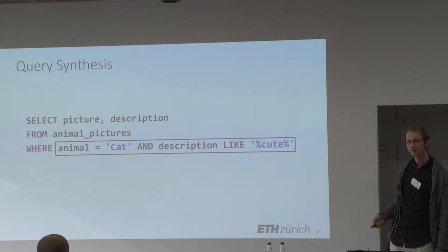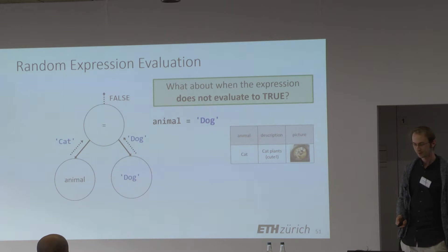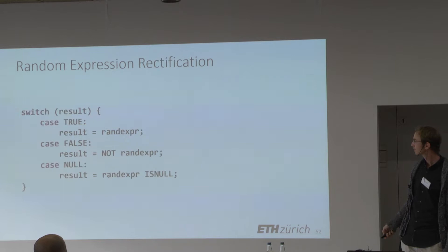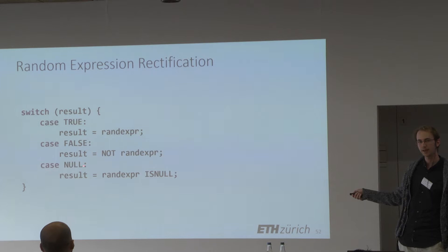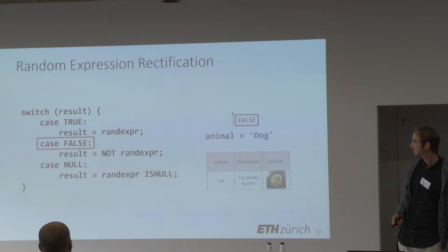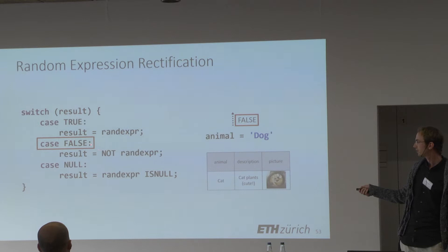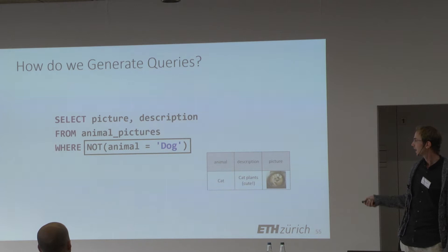What should we do when the expression does not evaluate to true? For example, if the expression is that animal should equal 'dog'. In this case, we have a fix-up logic. When the result evaluates to true, we can directly use the random expression. If it evaluates to false, we append the SQL NOT operator. Since SQL is a three-valued logic, we also need to handle the case where the value evaluates to null, in which case we use the IS NULL operator that evaluates to true when the value is null. So for 'animal equals dog', we go into the false branch, append the NOT operator, and we know the pivot row will be fetched.